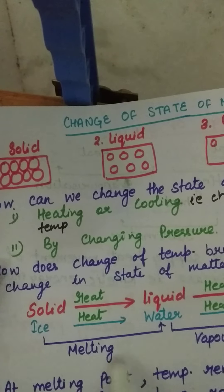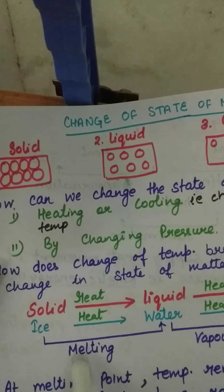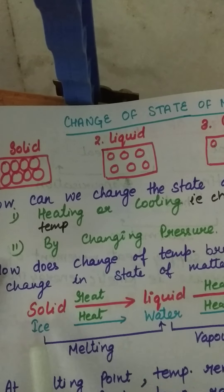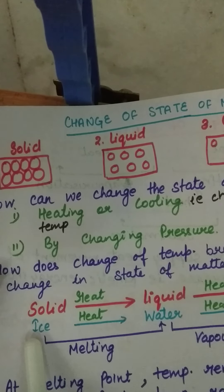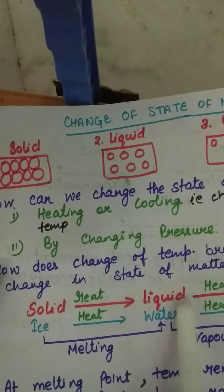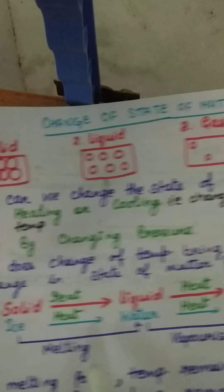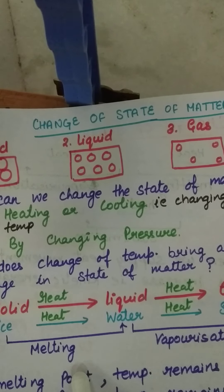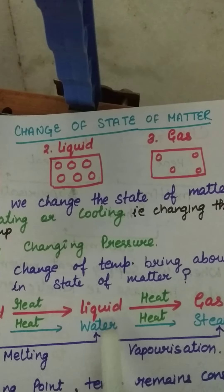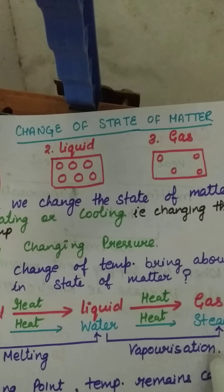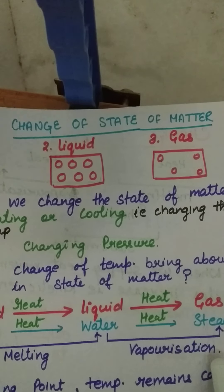Now what are these processes called? When solid changes to liquid, that process is called melting. It is also called fusion. Then the change of liquid to gas is called vaporization.